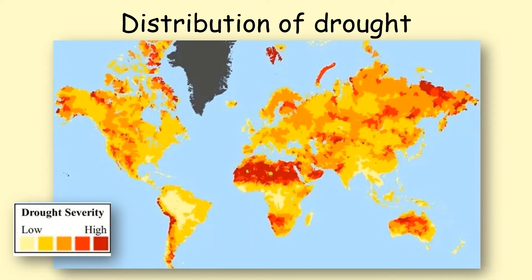Now on to drought. Every country in the whole world can experience drought — don't forget it's a reduction in the normal amount of rainfall in an area, so an area that gets lots of rain can experience drought. Areas where drought severity is high include the equator and a band at around 30 degrees north and 30 degrees south. These are areas where the Hadley and Ferrel cells meet. You get sinking air and high pressure, and that is the cause of drought.